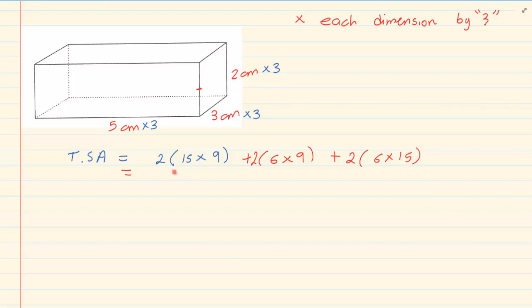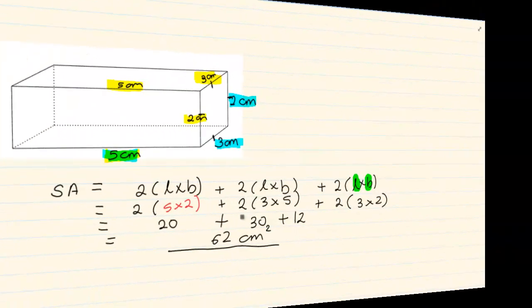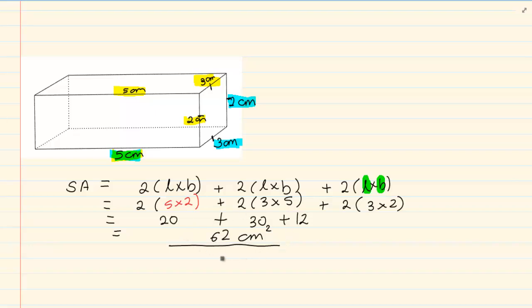Which is equal to 558 cm². Remember cm² because I am using area. If we take the surface area of the new one that we have calculated, so it is 558 cm², and we divide it by the surface area of the old one which is 62.